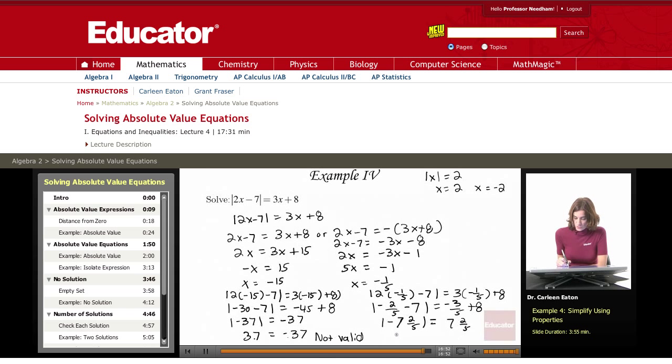The absolute value of negative 7 and 2 fifths is 7 and 2 fifths equals 7 and 2 fifths. And that is true. This is a valid solution. So I actually have only one solution to this equation and it is x equals negative 1 fifth.